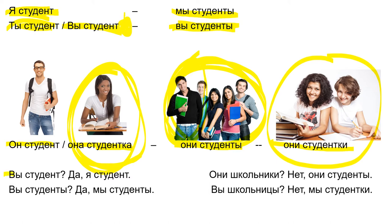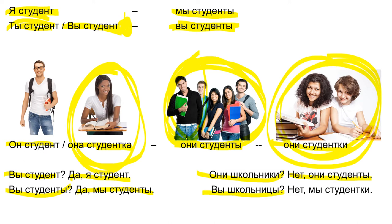Now questions. Вы студент? Да, я студент. Do you remember how to make questions? Intonation goes up. Вы студенты? (plural form) Да, мы студенты. Они школьники? Нет, они студенты. Вы школьницы? Нет, мы студентки.